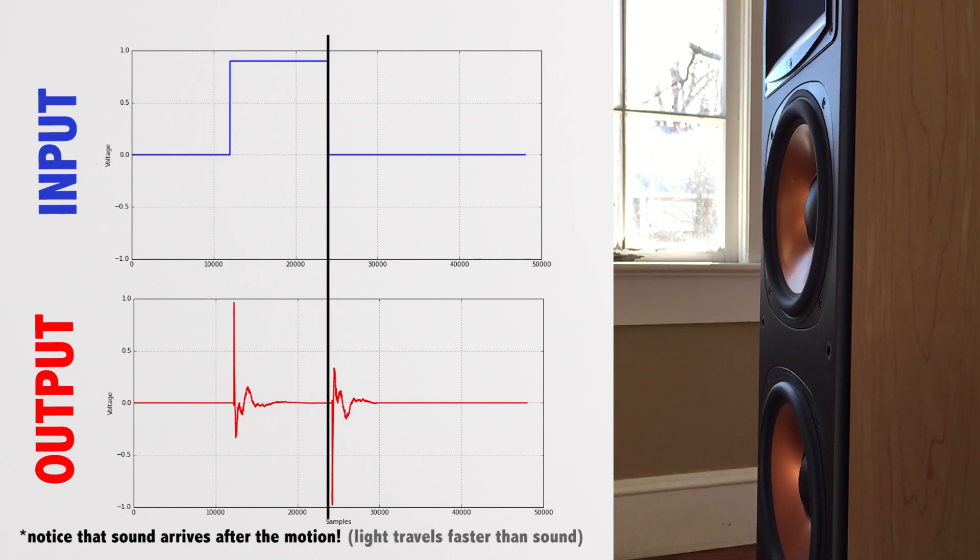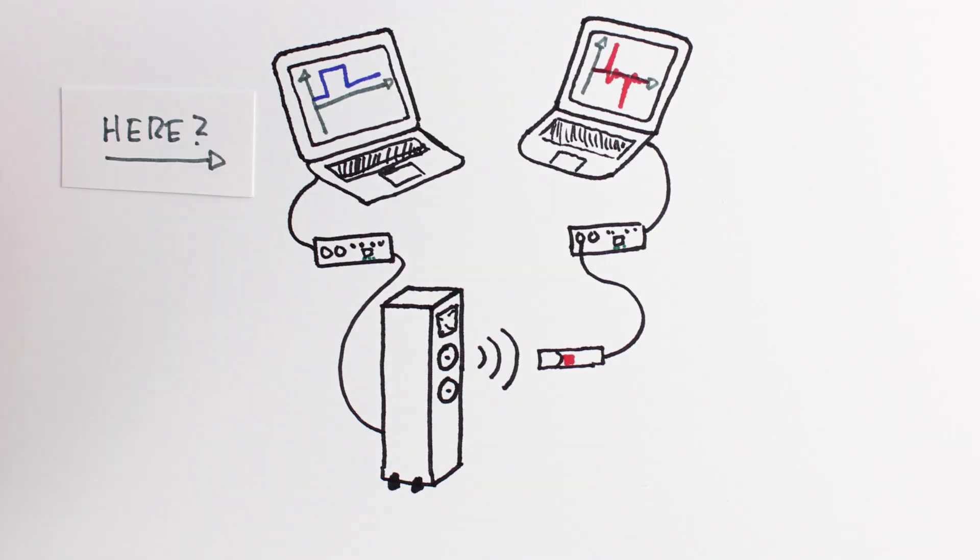Our speaker moves in a pattern that doesn't even resemble the voltage we applied across it. And it's not just that the motion of the speaker isn't perfect, it's that it's not even close. So where do you think the system is failing?